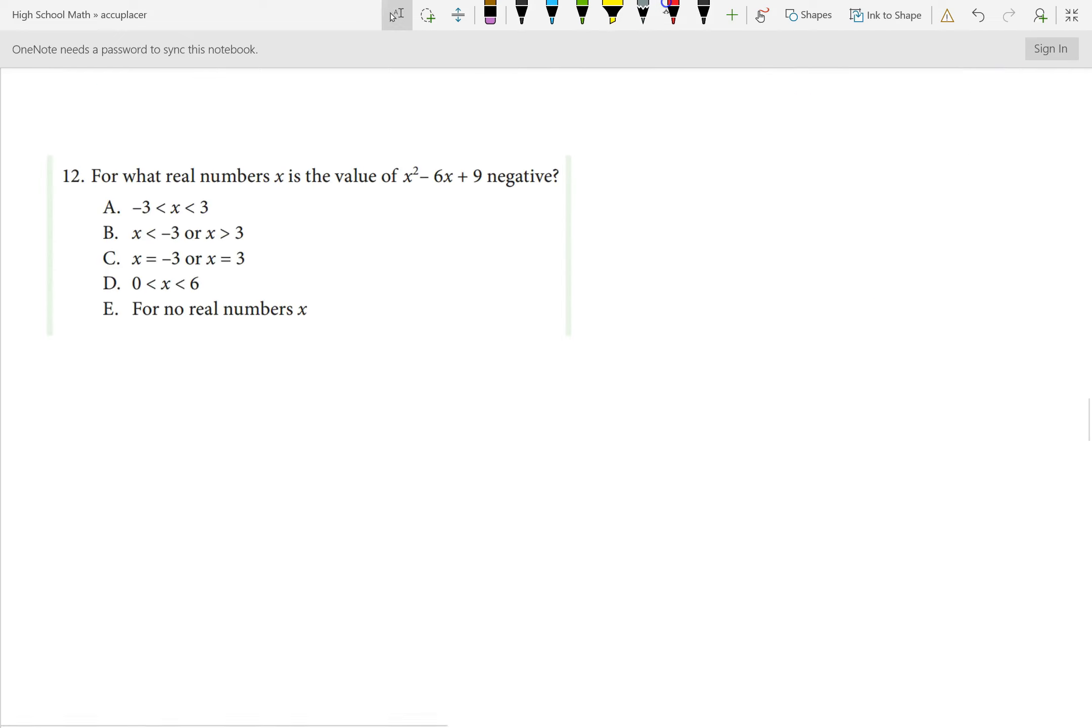Number 12. For what real numbers x is the value of x squared minus 6x plus 9 negative? Another way to say that is when is it less than 0. We want to know, when is x squared minus 6x plus 9 less than 0? So, what we want to do first is solve the associated equality. I'm going to look at x squared minus 6x plus 9 equal to 0. One way to solve this is by factoring. It turns out that this is a perfect square trinomial. It's going to be x minus 3 times x minus 3. So, the only value of interest is x equals 3. That is our critical value.